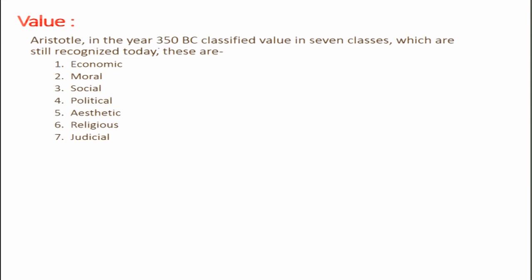The concept of value came as far back as 350 BC when Aristotle classified value into seven classes still recognized today: economic, moral, social, political, aesthetic, religious, and judicial. Economic value is the cost value in business. Moral value refers to the values someone believes in, instituted by parents or teachers. Social values relate to how one deals with people in society. Aesthetic value is about the appearance of products or people. Religious and judicial values are also included.